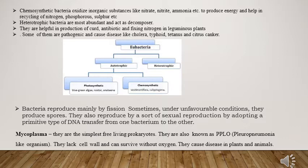The second type of autotrophic bacteria are chemosynthetic bacteria. These bacteria oxidize inorganic substances like nitrate, nitrite, and ammonia to produce energy. These bacteria also help in the biogeochemical cycle of nitrogen, phosphorus, and sulfur.